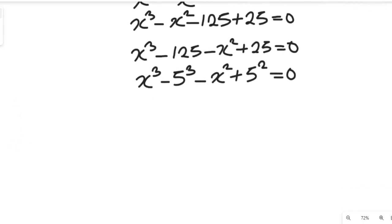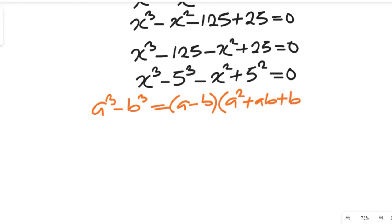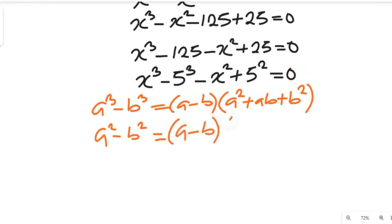Now let's recall some algebraic formulas that are very important. In algebra: a to the power of 3 minus b to the power of 3 equals a minus b, multiplied by a squared plus ab plus b squared. And a squared minus b squared equals a minus b multiplied by a plus b. We are going to apply these formulas to simplify our expression.